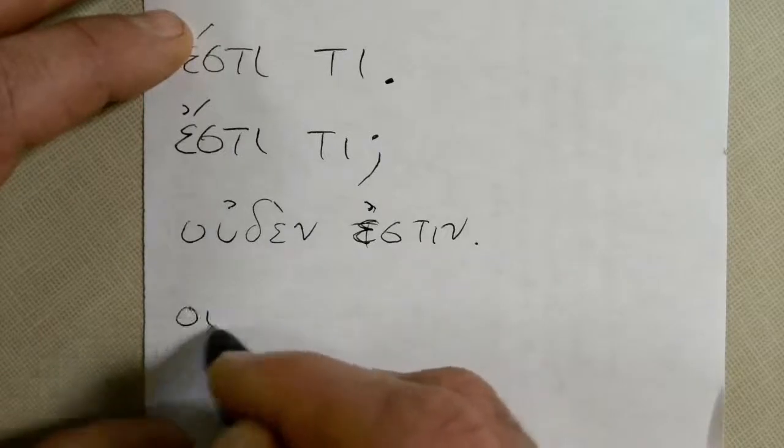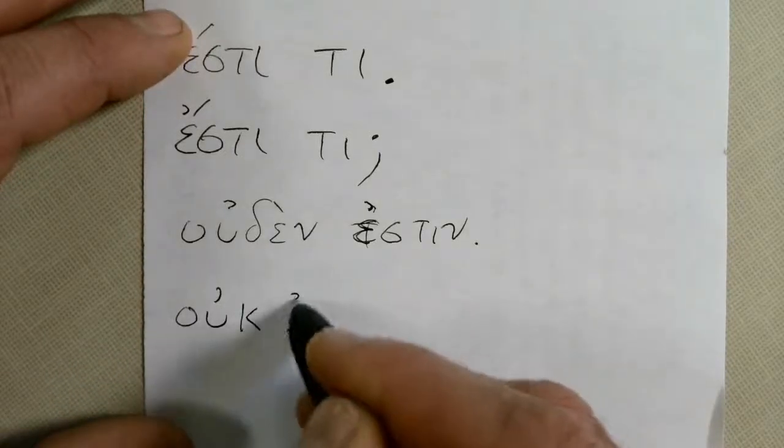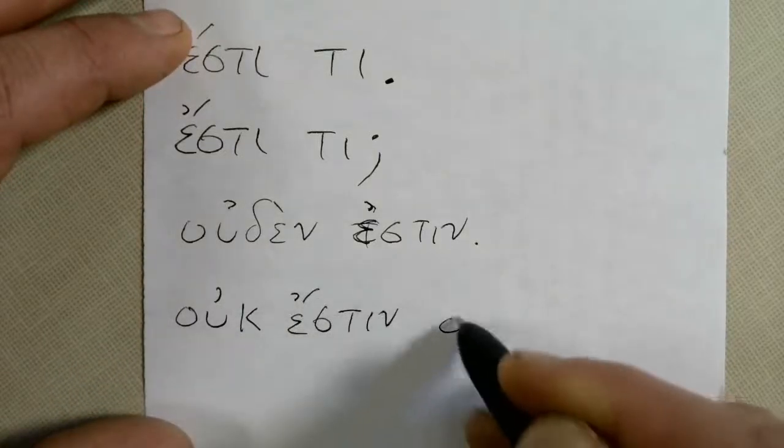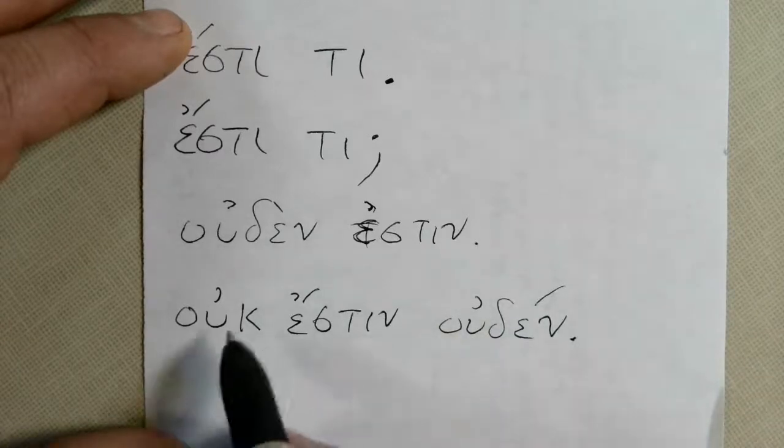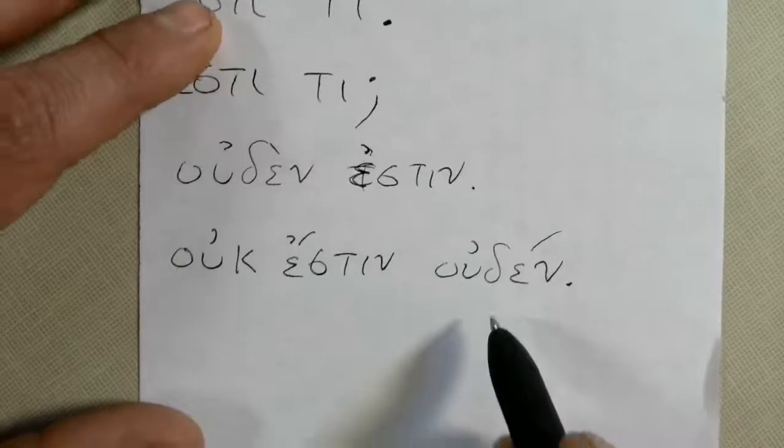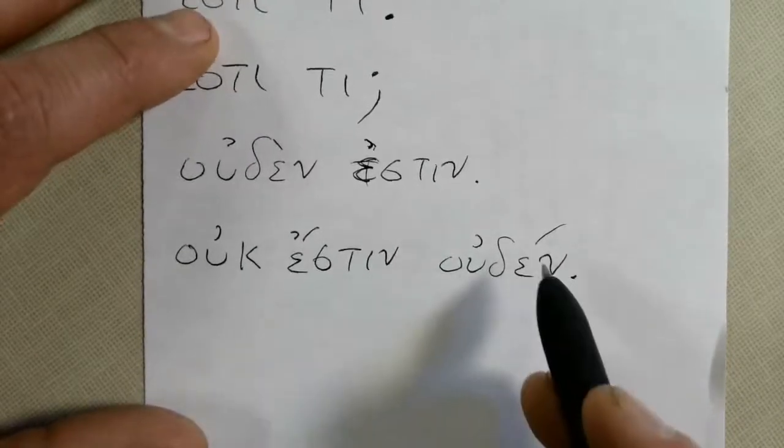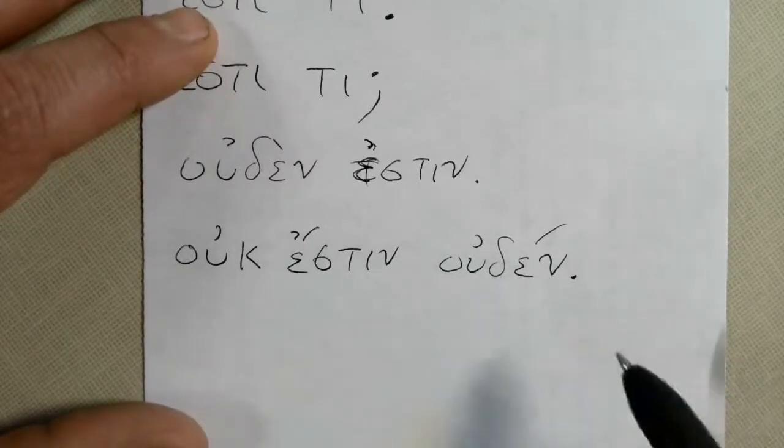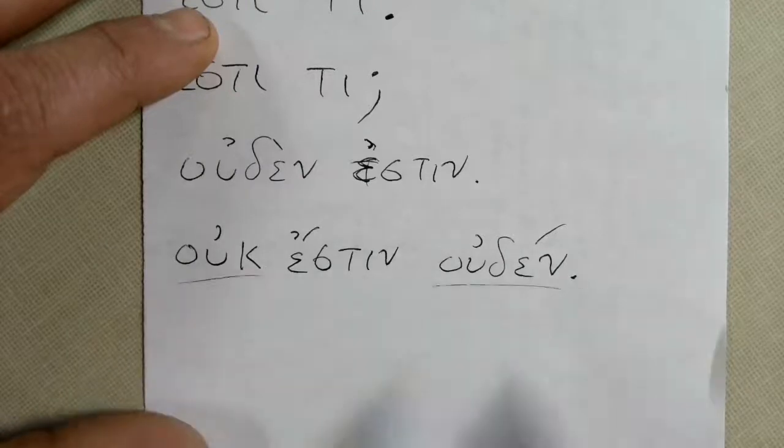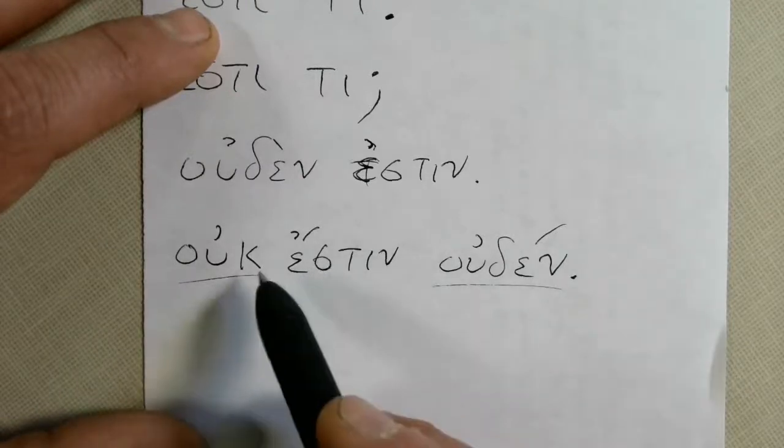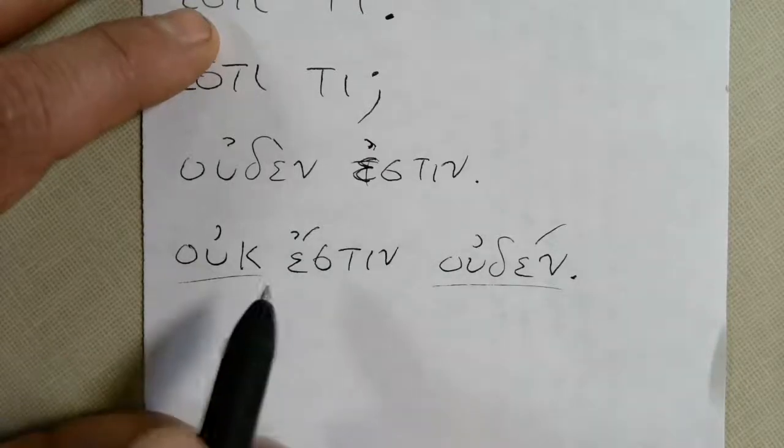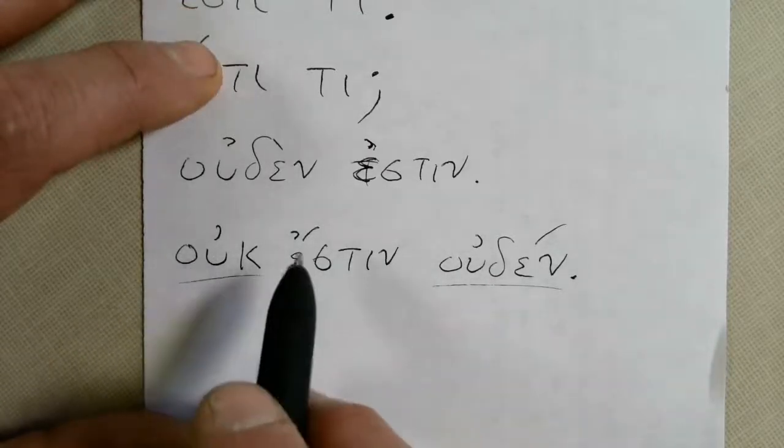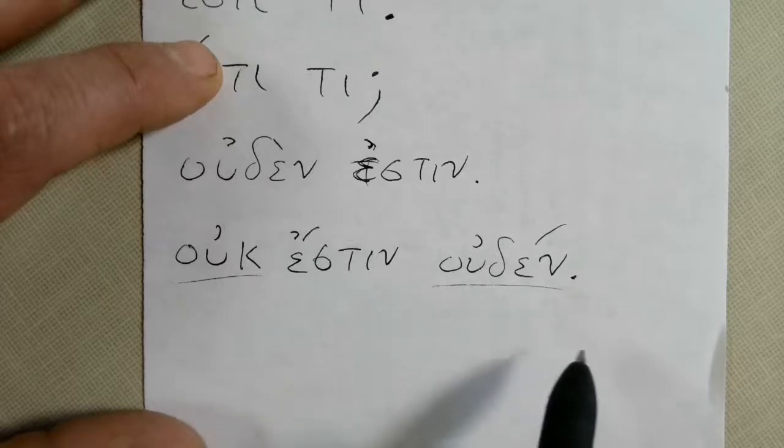You could also double it up and say u-then esti-ti. There is not nothing. Now that sounds like not nothing might mean something, but when they double it up like that it just makes it stronger. So we say u-then esti-ti, there is not anything. There is not nothing. U-then esti-ti, there is nothing.